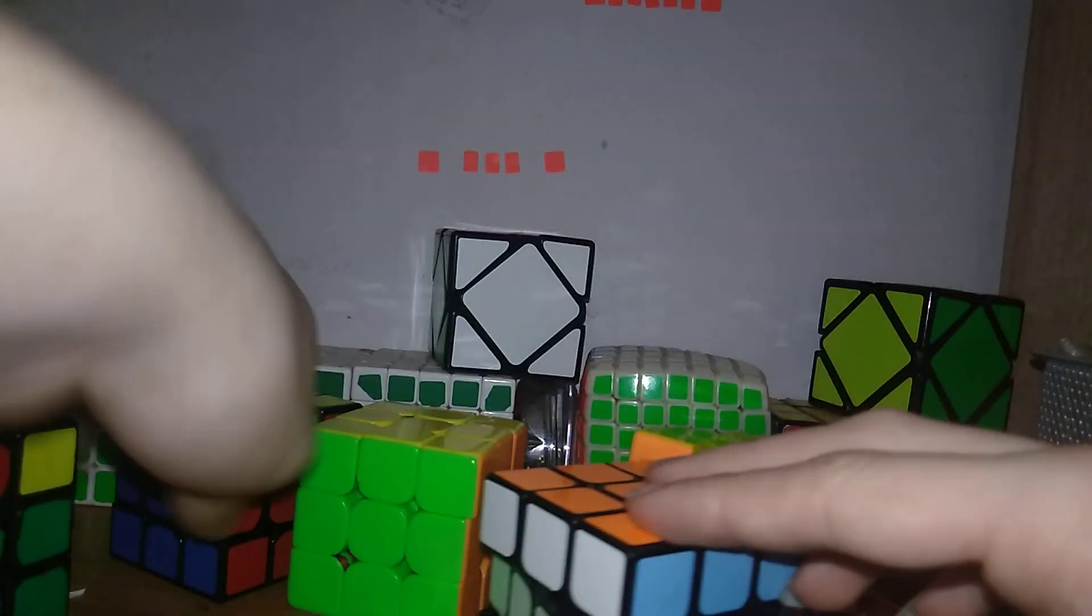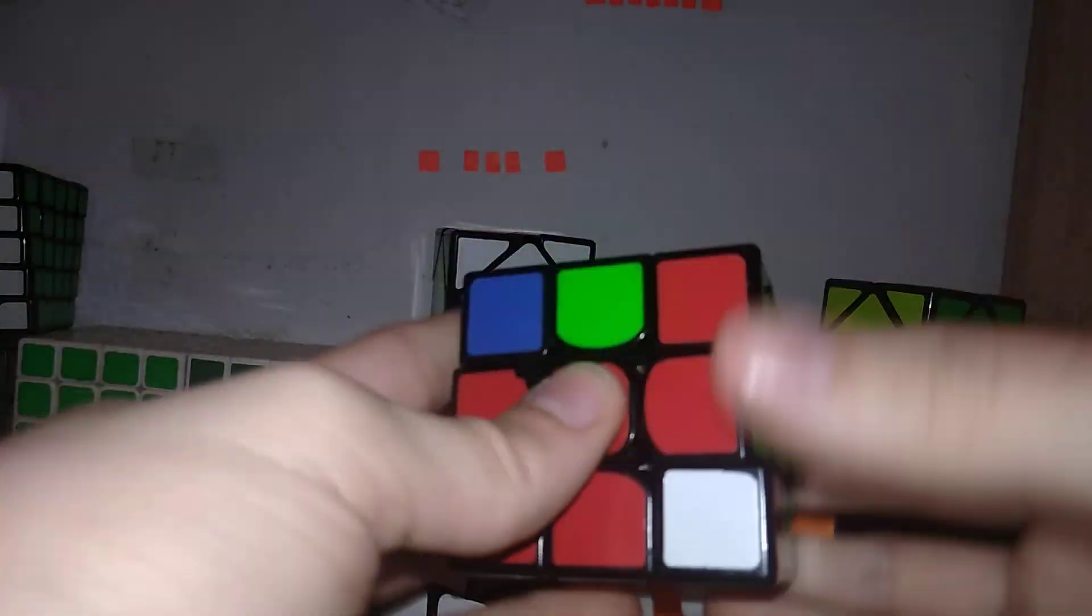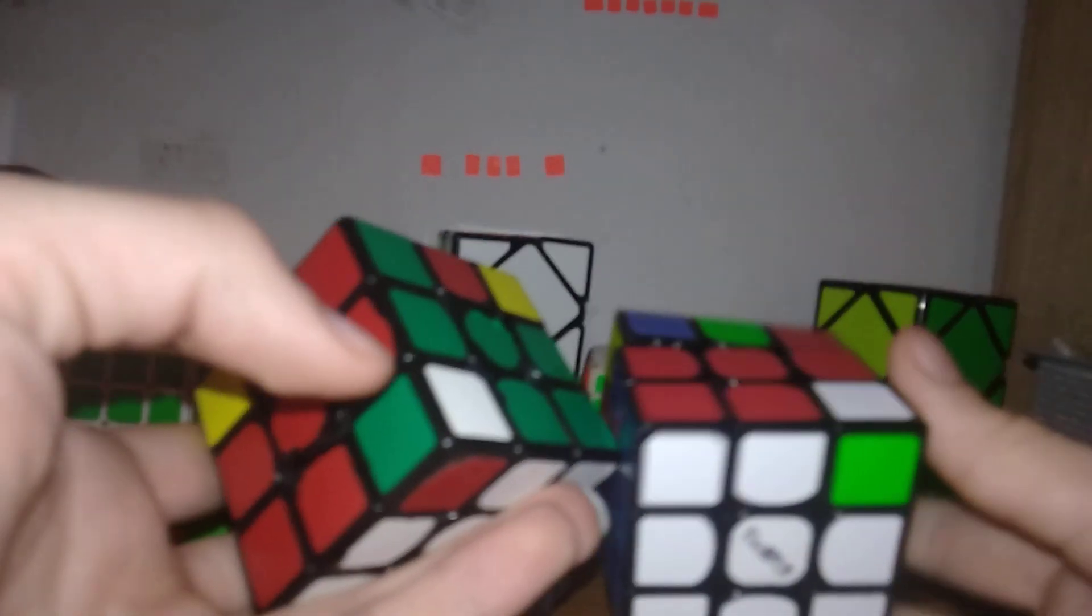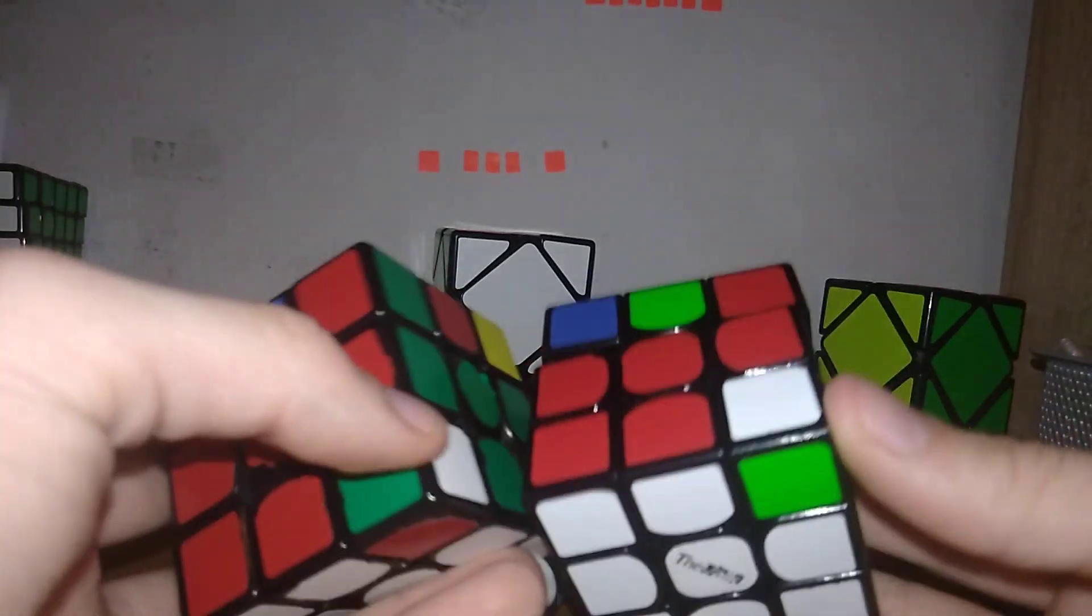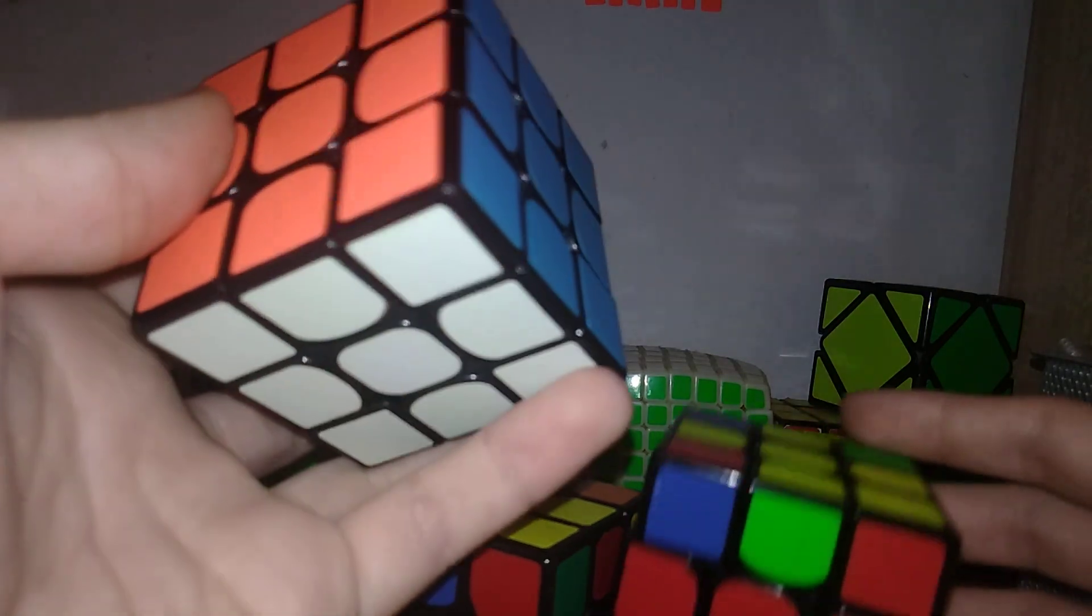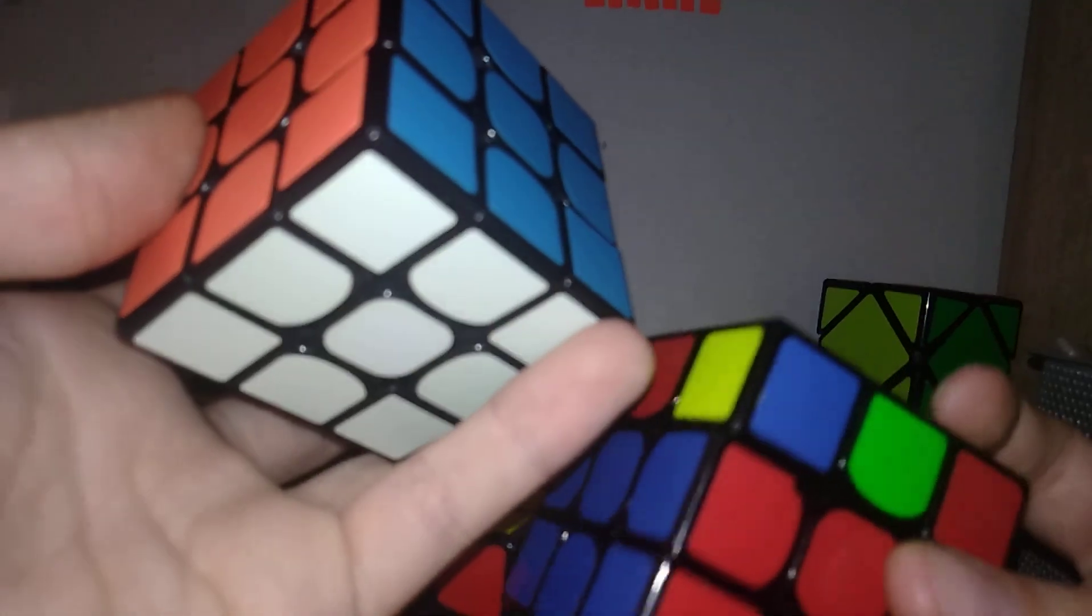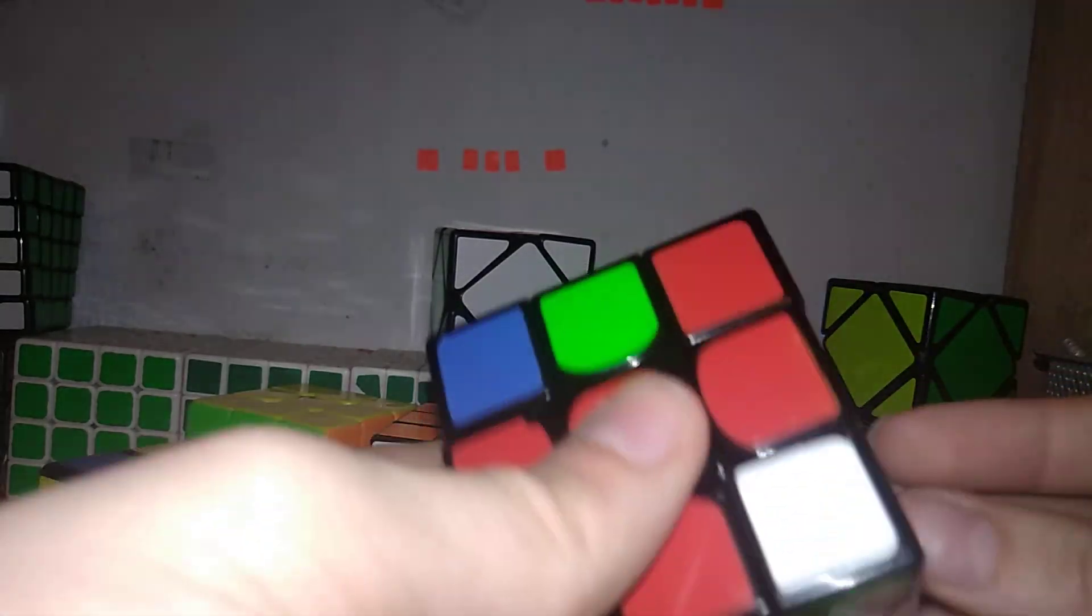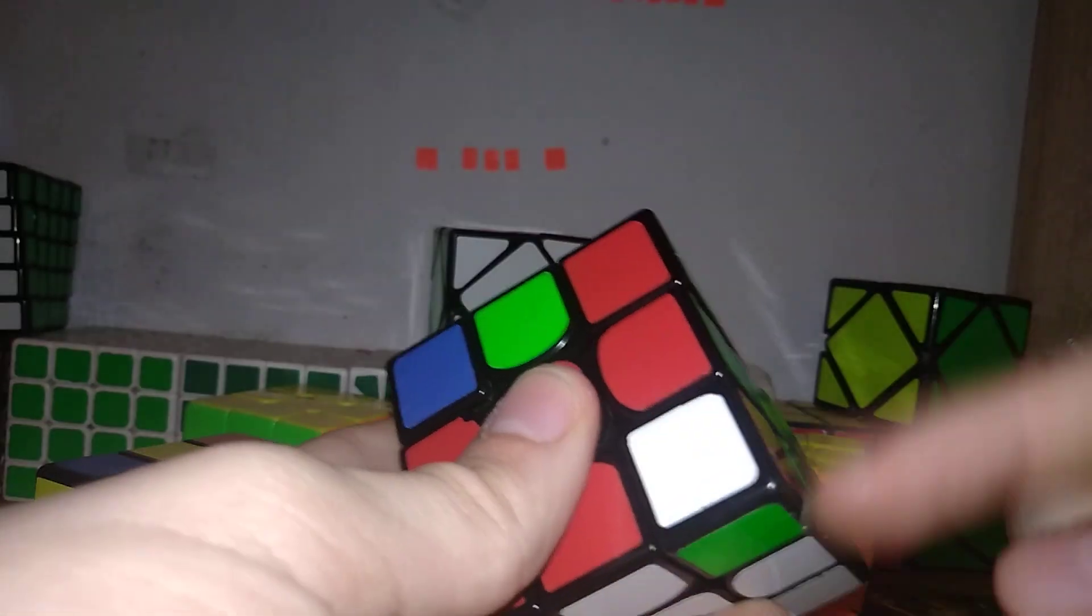And then we have the two cases where the corner or the edge is oriented and the only flipped piece in the slot is the corner. And obviously there is the standard F2L case but that's pretty dumb. You can just look up any tutorial for this, unless you want me to make a joke video. So let's start with F2L number 38 where the corner needs to cycle counterclockwise or twist counterclockwise.